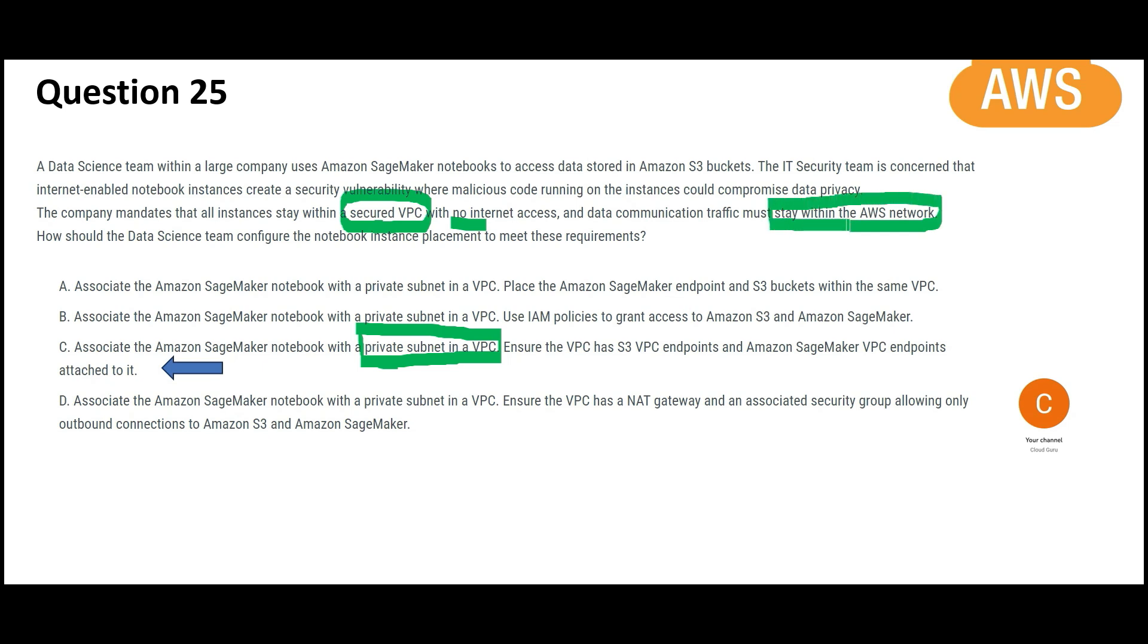And then it says all communication you should do within AWS network. We have to use S3 VPC endpoint and attach SageMaker VPC endpoint to it. So that within AWS itself, it will talk with S3 also. And no routing through internet will happen.